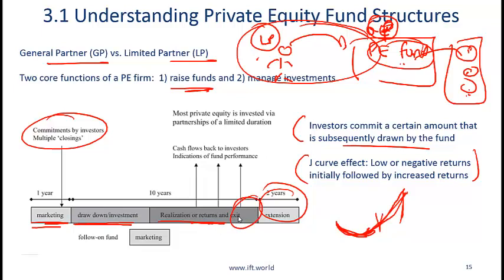There is a question about what happens at the end of 10 years. The private equity firm tries to have all investments liquidated and funds returned by then. If it turns out that is not the right time to liquidate and a little more time is needed, that is where the extension kicks in. The key point is that private equity funds do not go on indefinitely — they have a finite life of roughly 10 to 12 years.